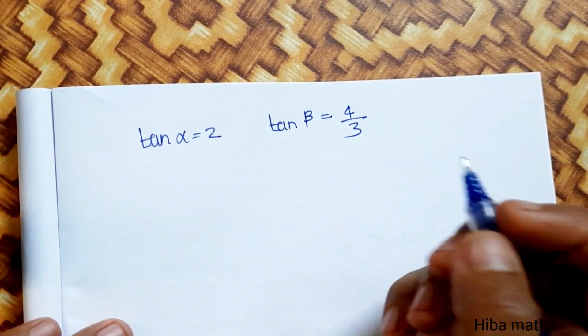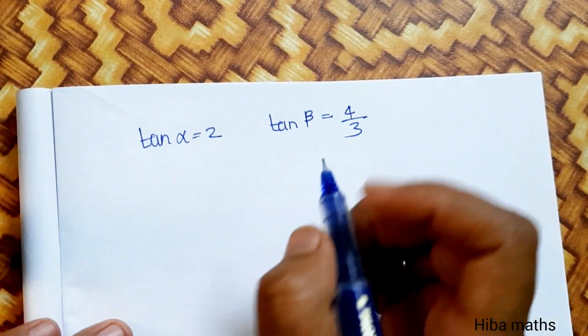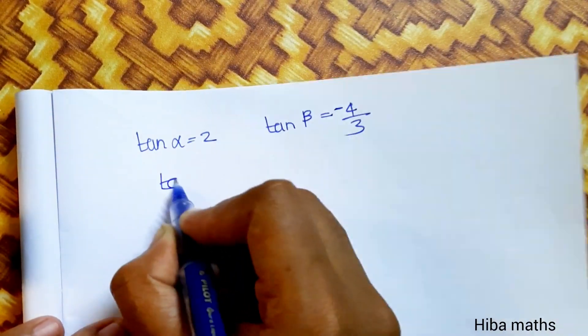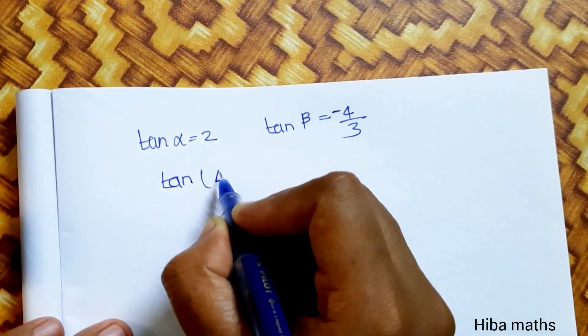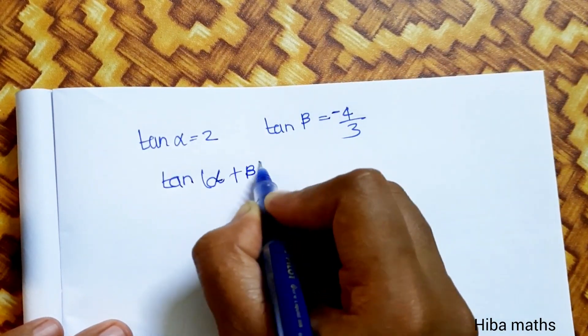Now we have the two values: tan α = 2 and tan β = -4/3. We need to find tan(α+β).